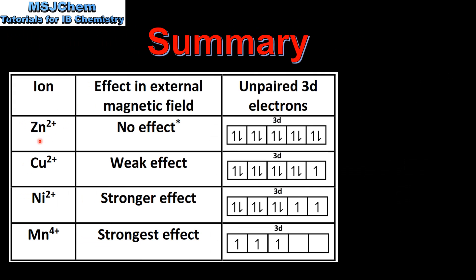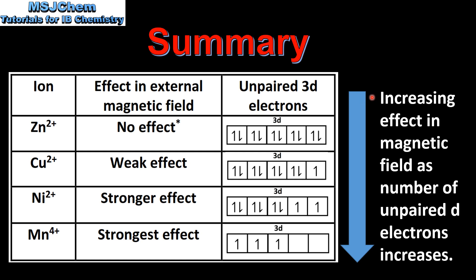Let's have a summary. The zinc 2+ ion showed no effect in the magnetic field and it has zero unpaired 3d electrons. The copper 2+ ion had a weak effect and it has one unpaired 3d electron. The nickel 2+ ion showed a stronger effect and it has two unpaired 3d electrons. The Mn⁴⁺ ion showed the strongest effect with three unpaired 3d electrons. From this we can see there is an increasing effect in the magnetic field as the number of unpaired d electrons increases.